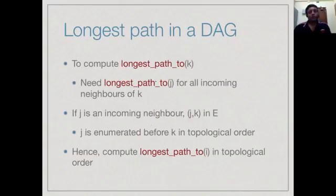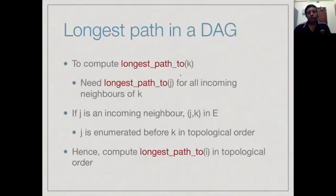To compute the longest path to k, we need to have already computed the longest paths to all its incoming neighbors. If we arrange the vertices in topological order and compute the longest path in that sequence, then when we get to k, every incoming neighbor j will appear to its left — meaning we would have already computed its longest path. So we can take the maximum of all those and add 1. By sorting vertices in topological order, we can compute the longest path with the guarantee that all required information is available.